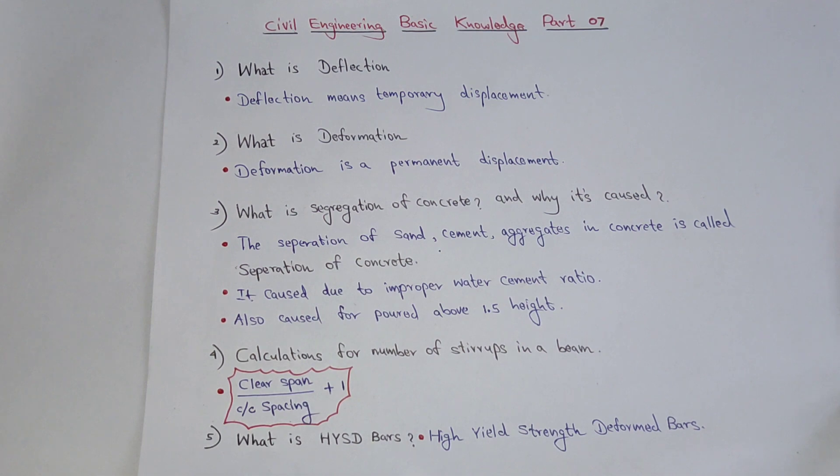We'll move on to the third one. What is segregation of concrete and why does it occur? Segregation of concrete means the separation of sand, cement, and aggregate.